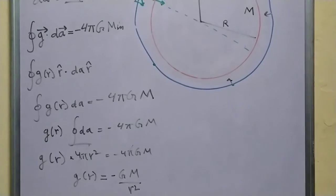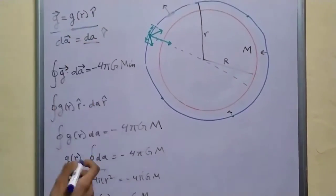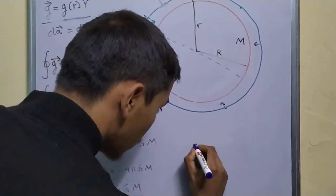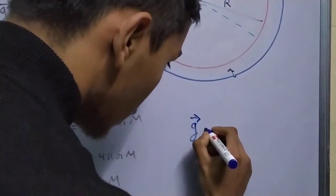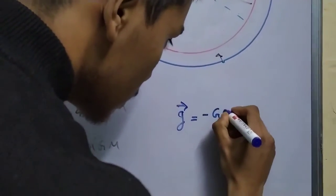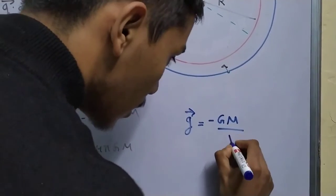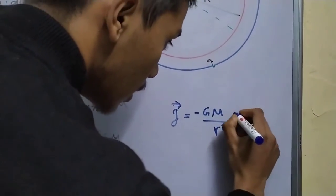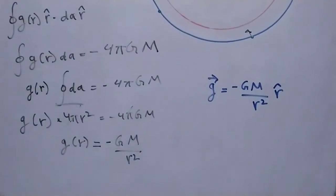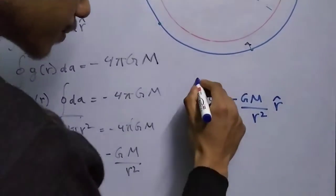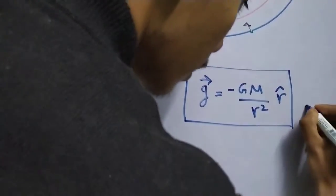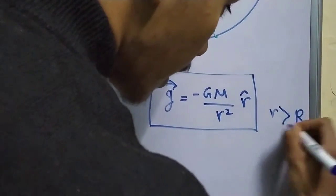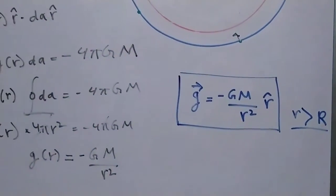So finally, the field itself, the vector quantity, is G minus G M upon R square in the R cap direction, for R greater than the radius if you are outside the spherical body.